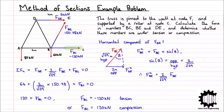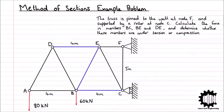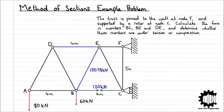Going back to our original diagram, we can conclude that the force in member BC is 120 kN and is applying compression to the member. The force in member BE is 150.78 kN and is applying tension to the member, and the force in member DE is 64 kN and is also applying tension to the member.